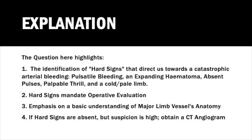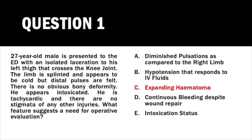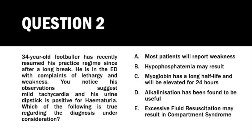In this example, there was an expanding hematoma. This question also highlights the need to understand the surface anatomy of major blood vessels in the upper and lower limbs to identify potential vascular injury. If hard signs are absent but clinical suspicion is high, get a CT angiogram. The answer is expanding hematoma — this patient needs operative evaluation.